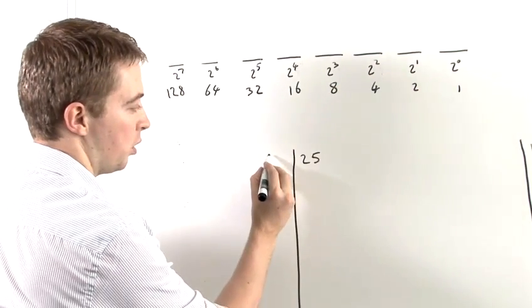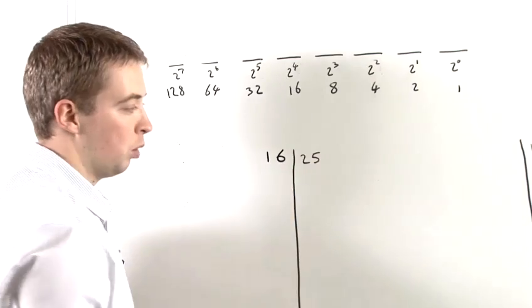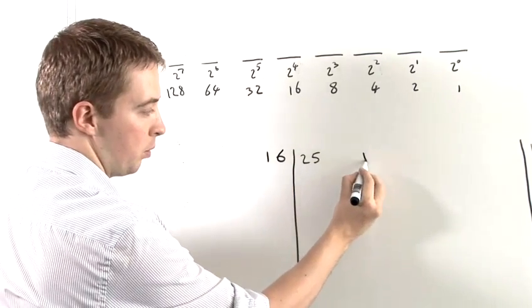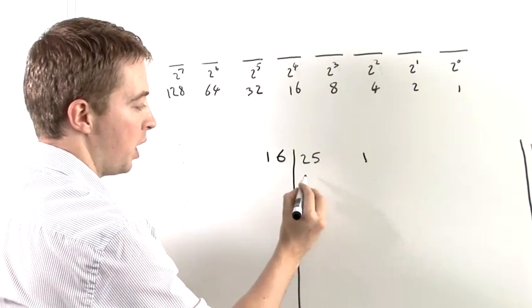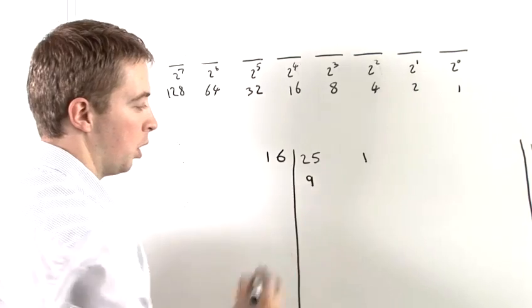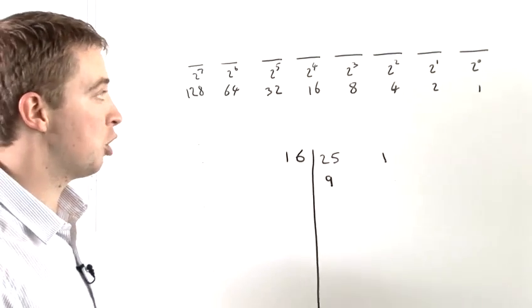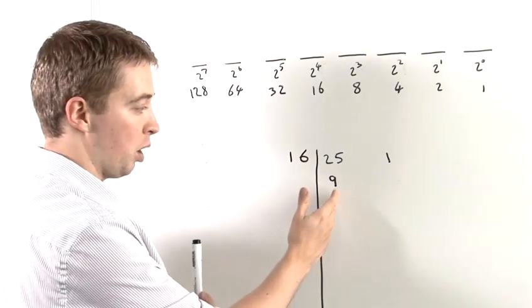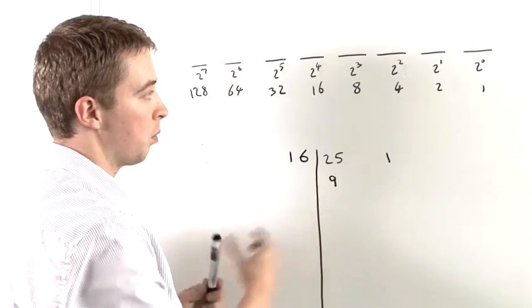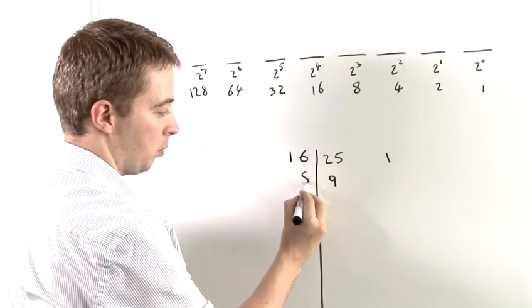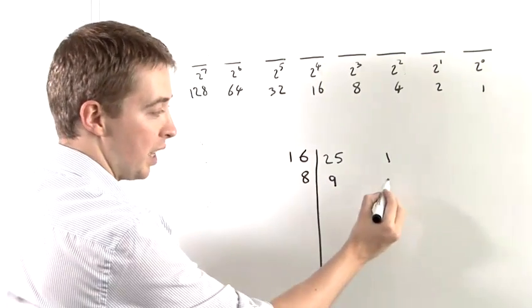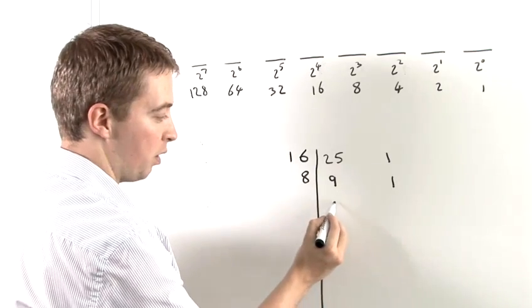What we're going to do is divide 25 by 16, which is 1, and we get a remainder of 9. And essentially, then, we just repeat the process. So we look at where 9 is. We're going to divide by 8. 9 divided by 8 is again 1, and we have a remainder of 1.